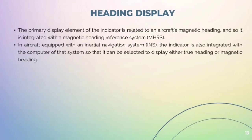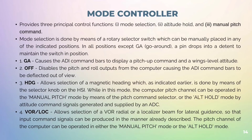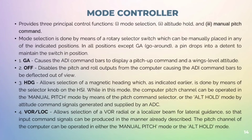Mode Controller provides three principal control functions: mode selection, altitude hold, and manual pitch command. Mode selection is done by means of a rotary selector switch which can be manually placed in an indicated position. In all positions except GA (go around), a pin drops into a detent to maintain the switch in position. GA causes the ADI command bars to display a pitch-up command and a wings-level attitude.